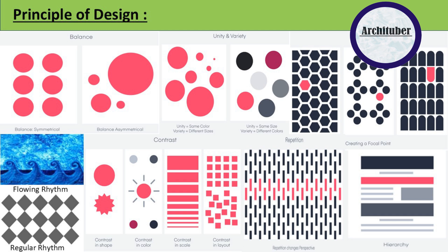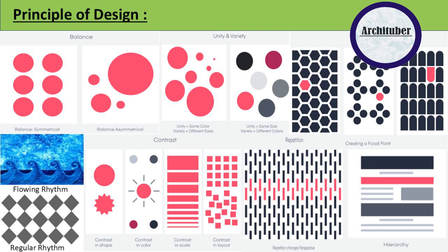Now that you have learned about principles of design and basic 3D shapes, how will you create a composition? You need to understand the methods of composition and how you can create a creative, unique composition. On screen we have different methods: rule of thirds, grid pattern, diagonal, radial, L arrangement, circular, pyramidal, V arrangement, cross, focal mass — there are many methods. You have to understand which principle of design can go with which composition method, and accordingly use a particular composition for a particular design principle.